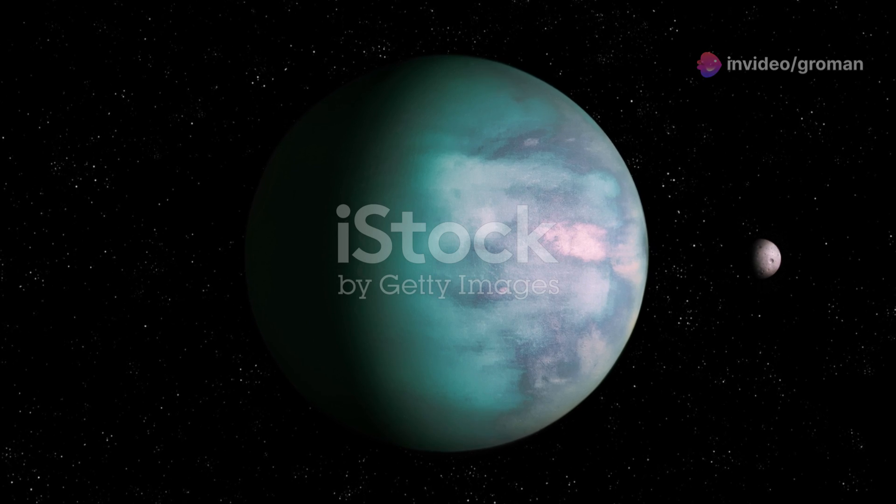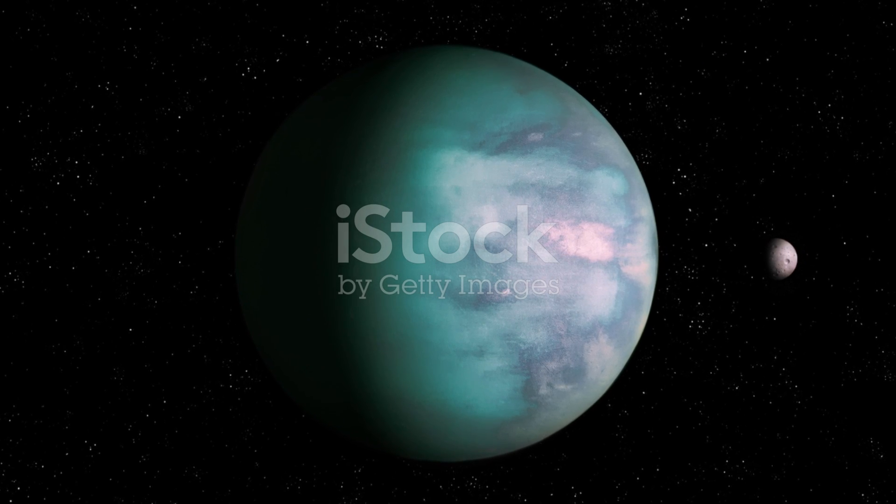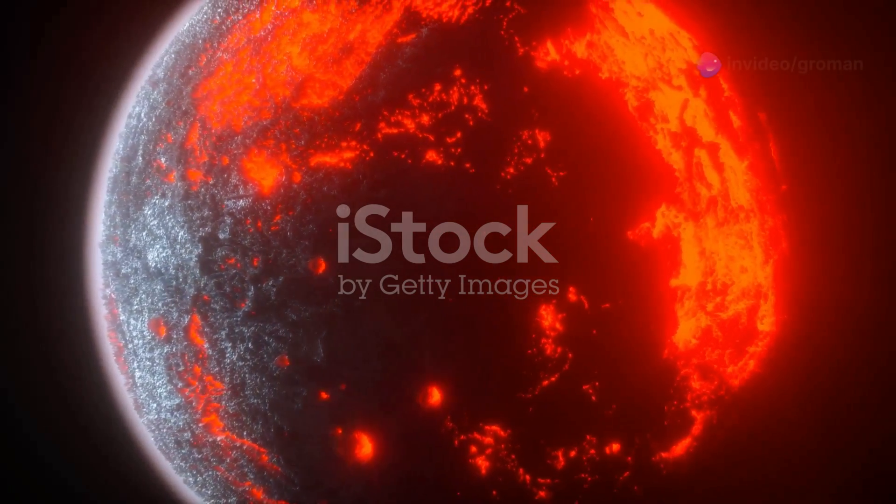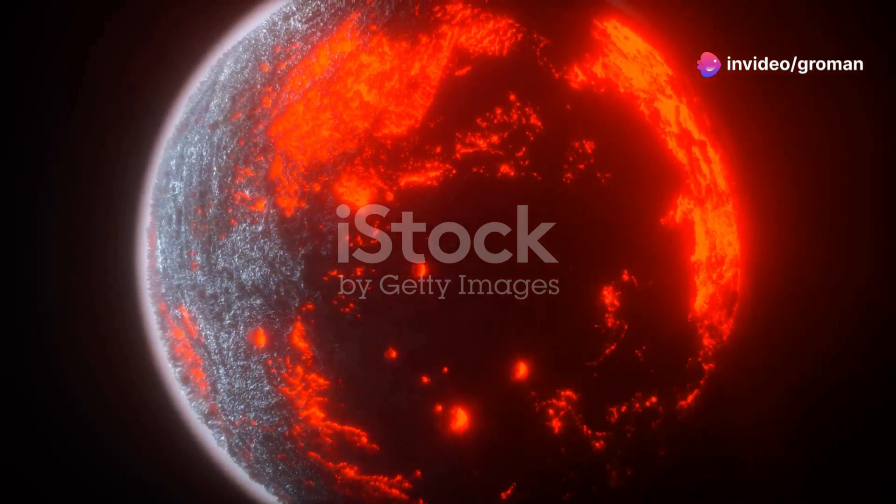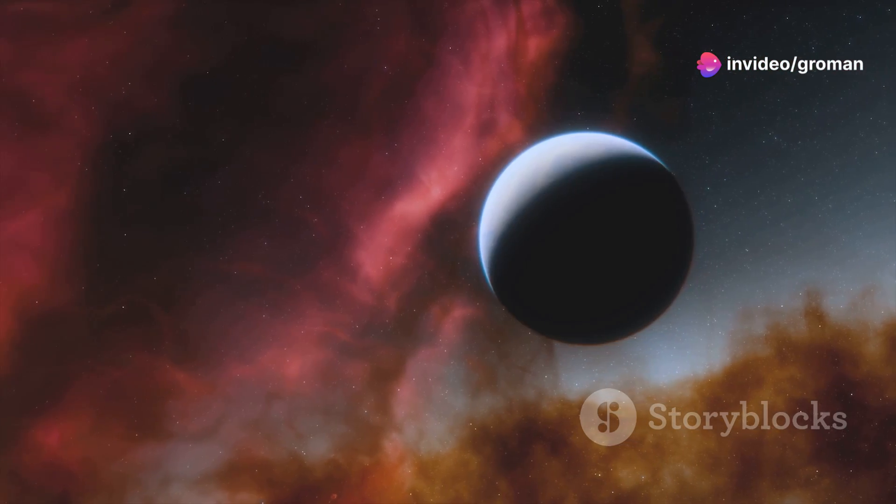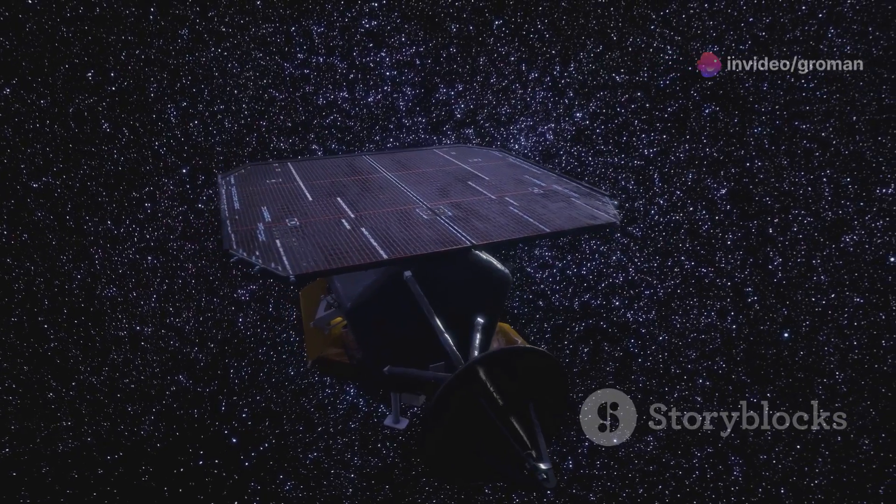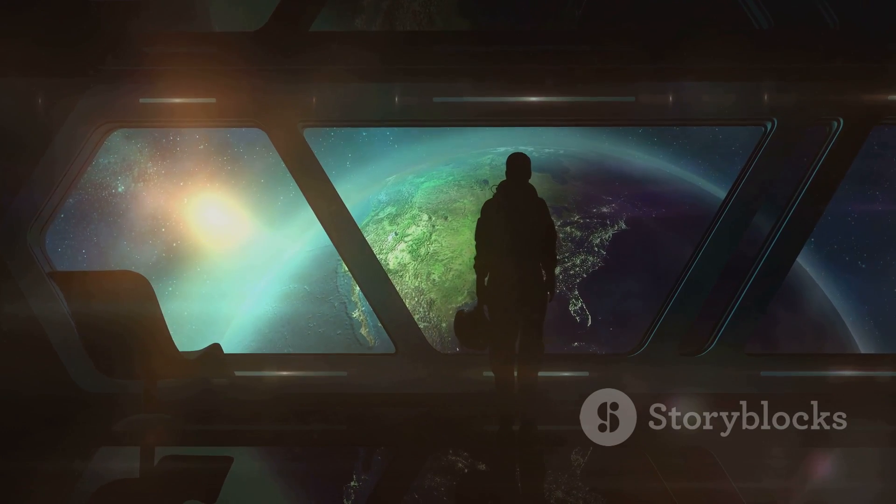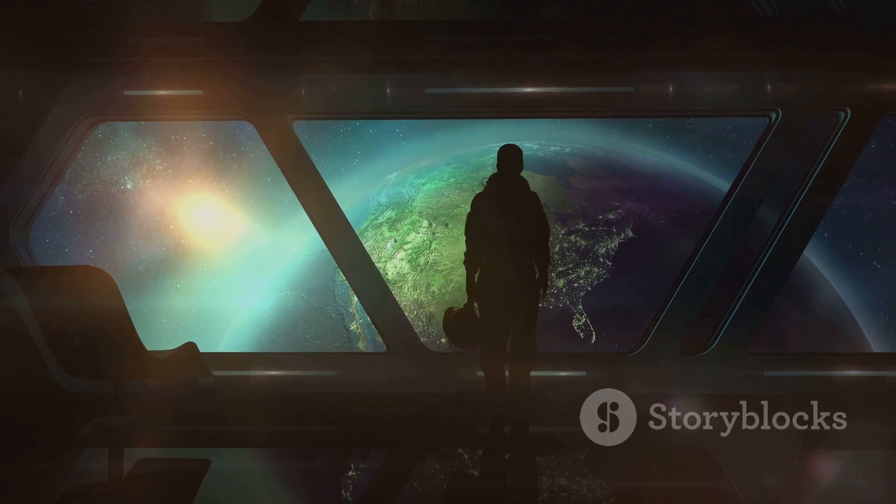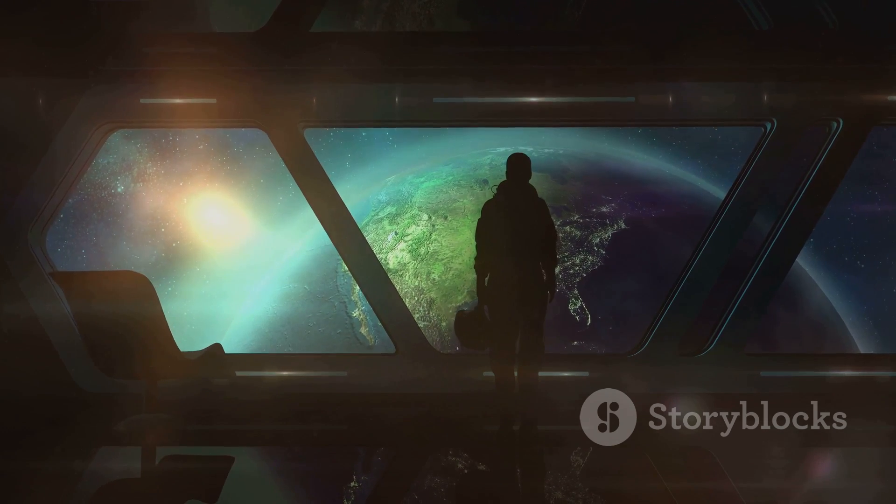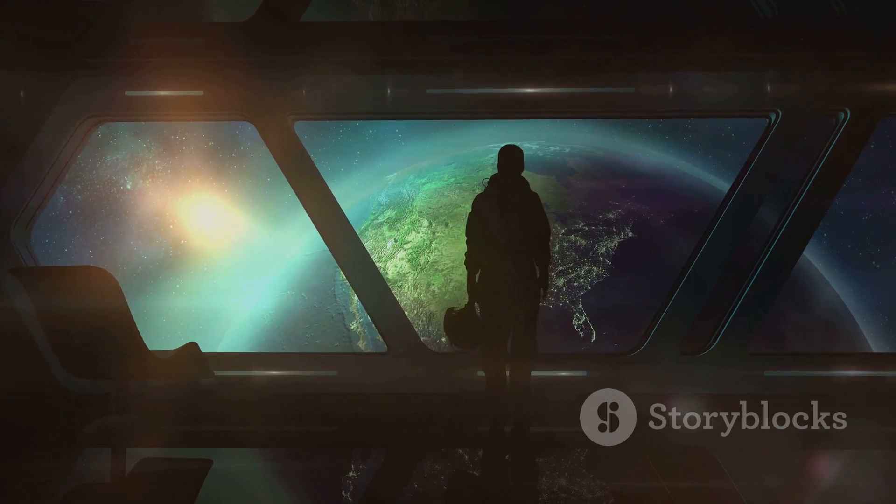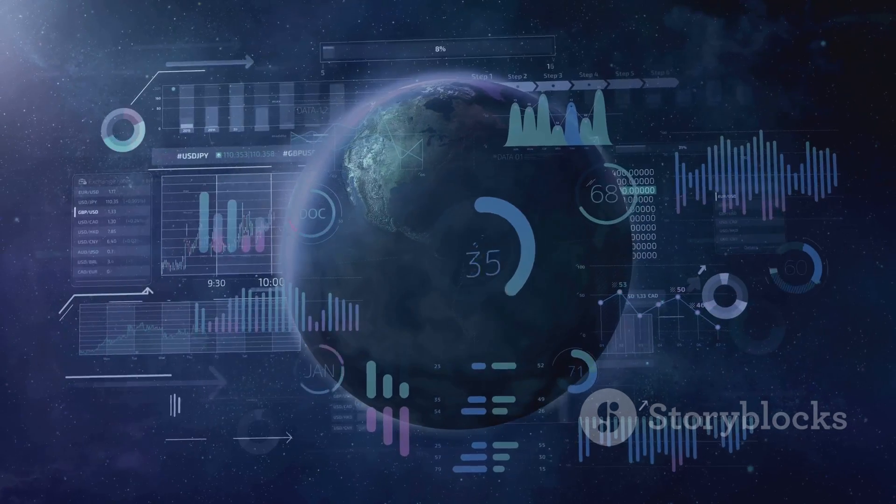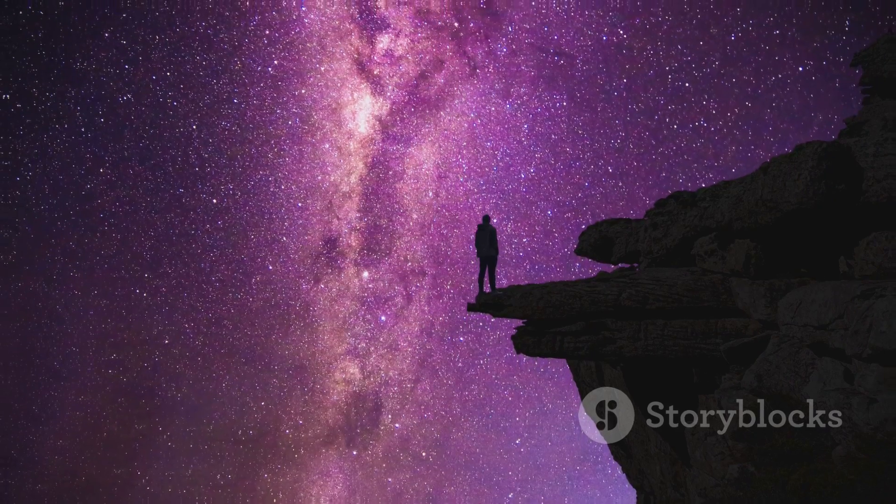So there you have it. The recipe for a life-friendly planet. Liquid water, a breathable atmosphere, a stable climate, a magnetic field for protection, energy sources, essential nutrients, a solid surface, and plenty of time. Could there be another planet out there with all these ingredients? The search for life beyond Earth continues. And who knows, the next great discovery could be just around the cosmic corner. If you enjoyed this cosmic journey, hit the like button, subscribe, and let me know in the comments. What do you think the next Earth-like planet will be like? Until next time, keep looking up.